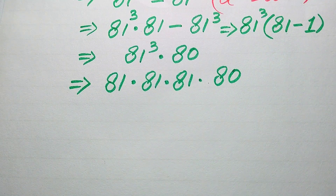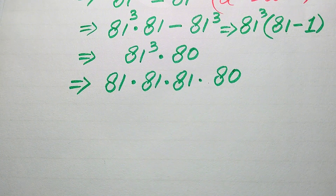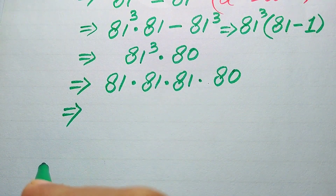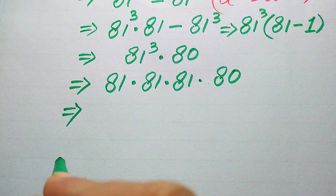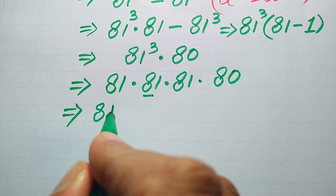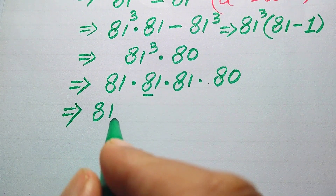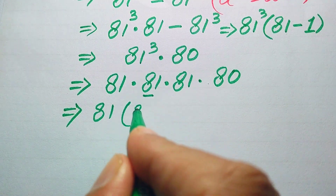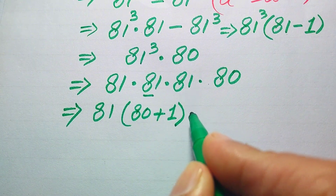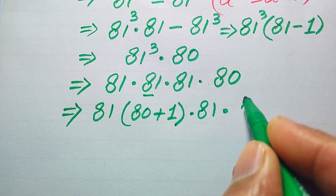Since the calculator is not allowed, I'll show you a smart technique to multiply bigger numbers manually. If you have another method in mind, please share it in the comment section. First, we break 81 into the form of tens and ones, writing it as 80 plus 1, and the resulting answer is then multiplied by 81 and then by 80.